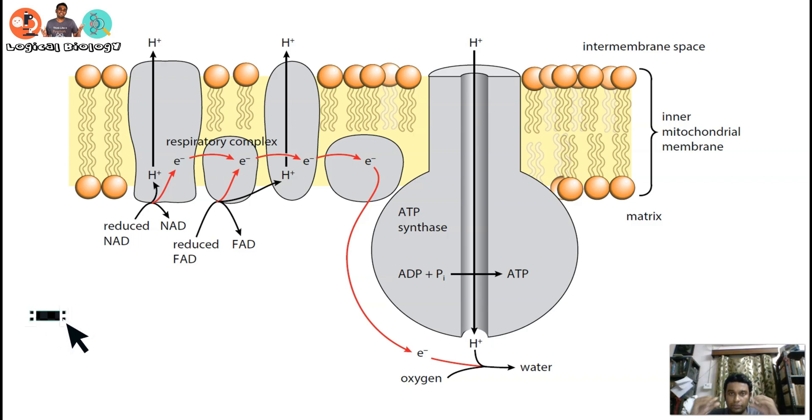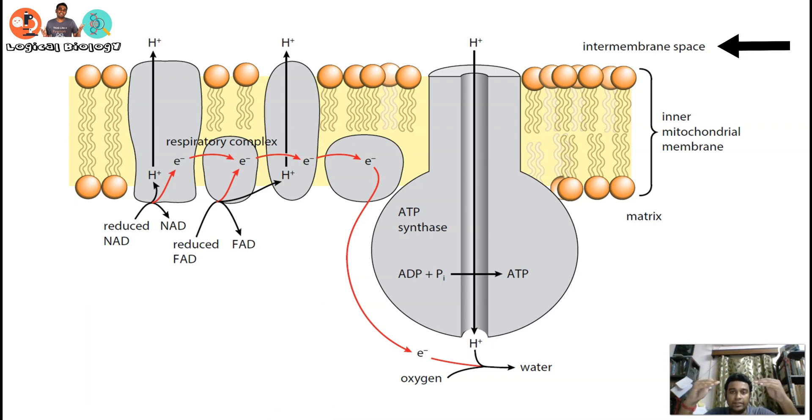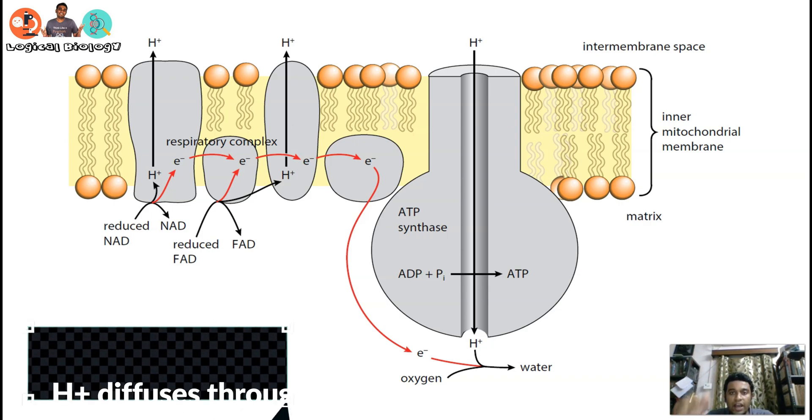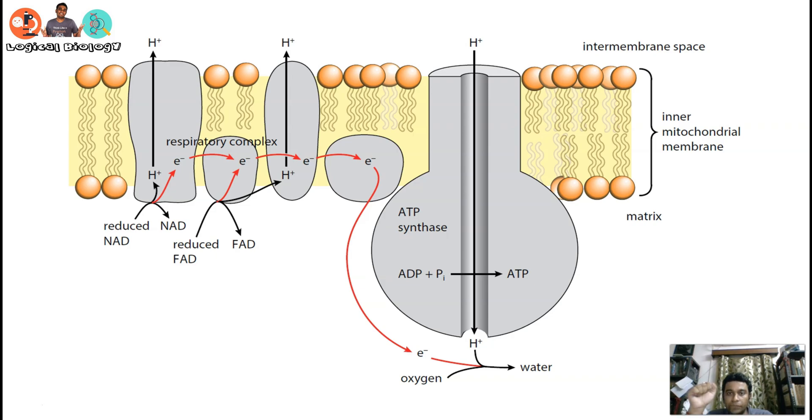As a result, you are slowly developing a proton gradient. That means more protons, more H+ ions will be inside the intermembrane space than the matrix of the mitochondria. Due to this gradient, these protons will start diffusing through the ATP synthase.